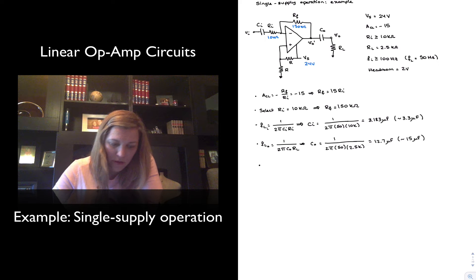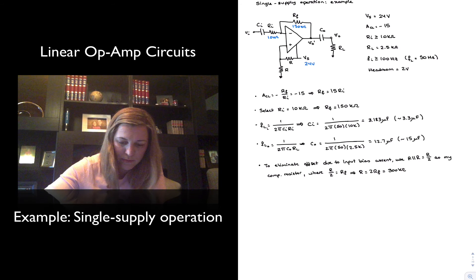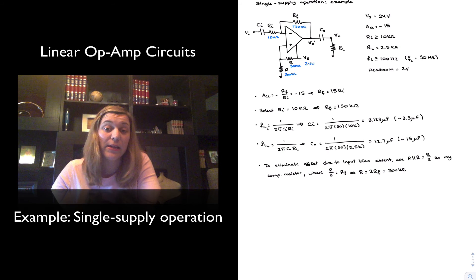And so I'll just say to eliminate offset due to input bias current, use R in parallel with R, which is equal to R halves as my compensation resistor. And therefore we want where R halves is equal to RF. And therefore R is equal to 2RF, or 300 kΩ. And again, that's not a step that we will necessarily need to take since we have not been told that we are to minimize the DC offsets. But if we are smart designers, we will do it because it comes at no extra cost.